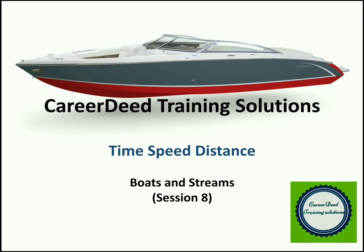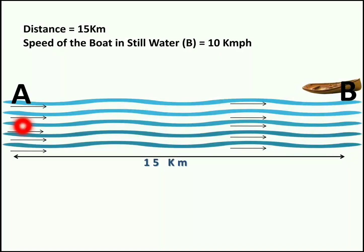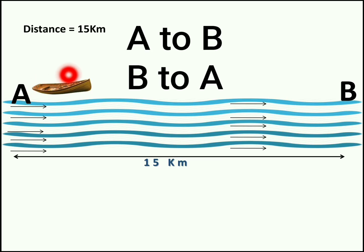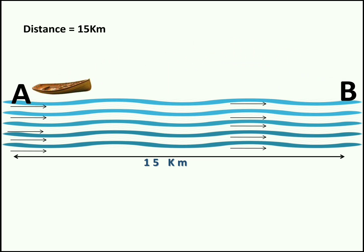Stay connected with me till the end. In the screen, you are looking at two points A and B. Distance between A and B is 15 kilometers as shown in the picture. Now listen to the scenario carefully. Rahul travels from A to B and returns back to A every day in a boat. One more piece of information provided is that the flow of water is from A to B as shown in the picture — you can imagine there is a river flowing from A to B.